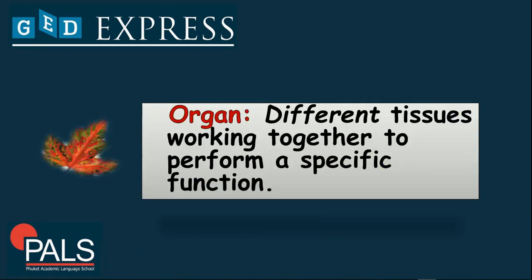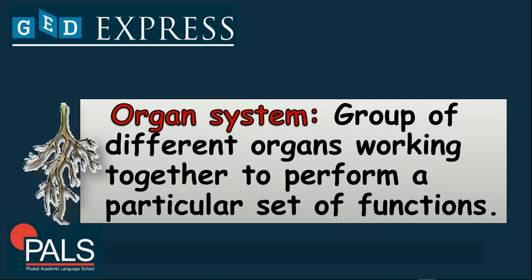Next we have an organ. An organ is basically a combination of two or more tissues, and they also perform a specific function. If you're going to combine two or more organs together, that will give you an organ system.